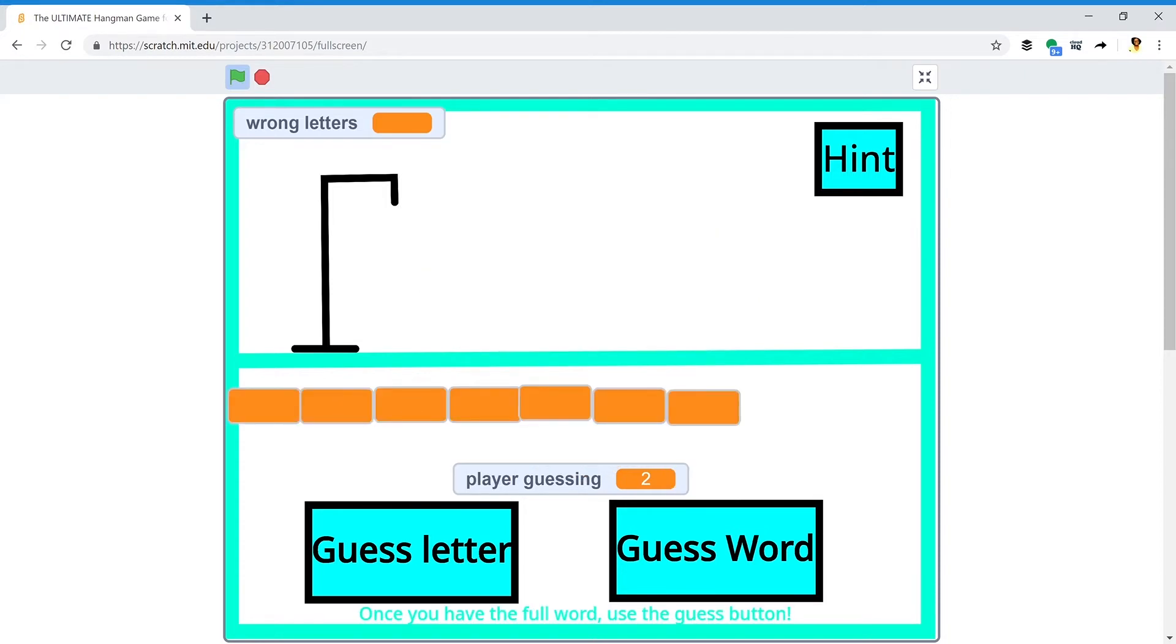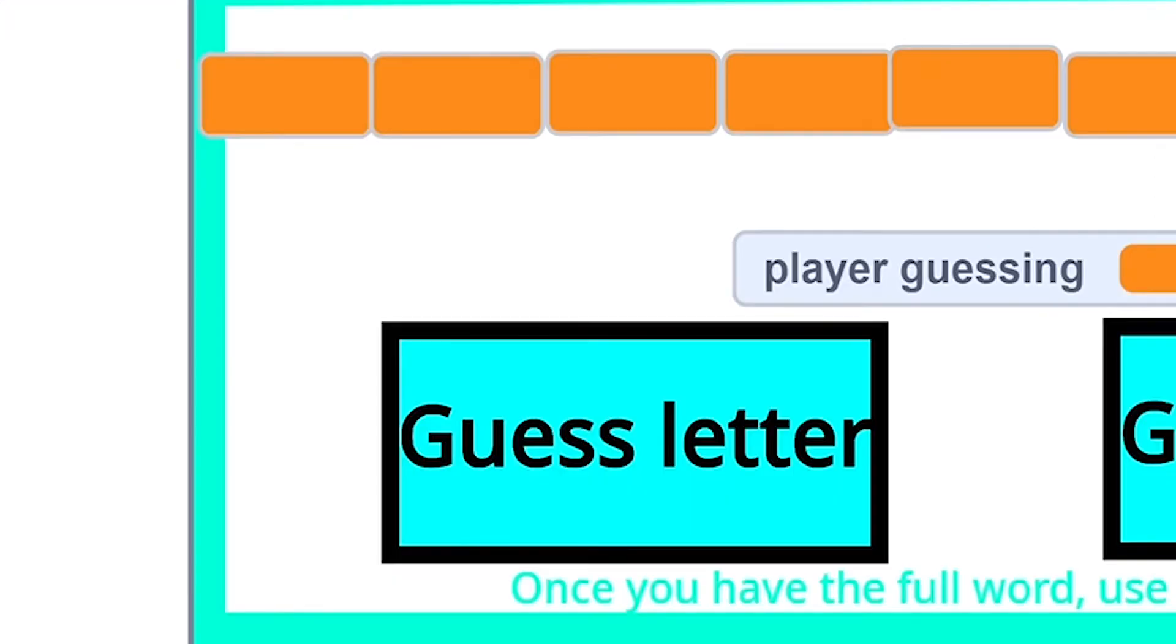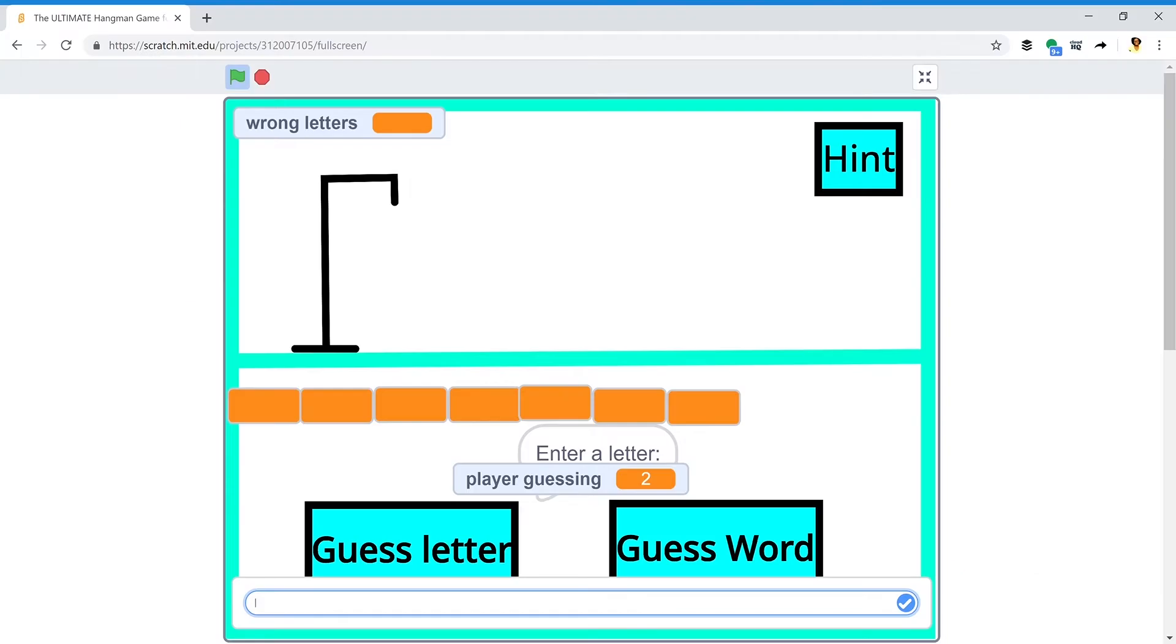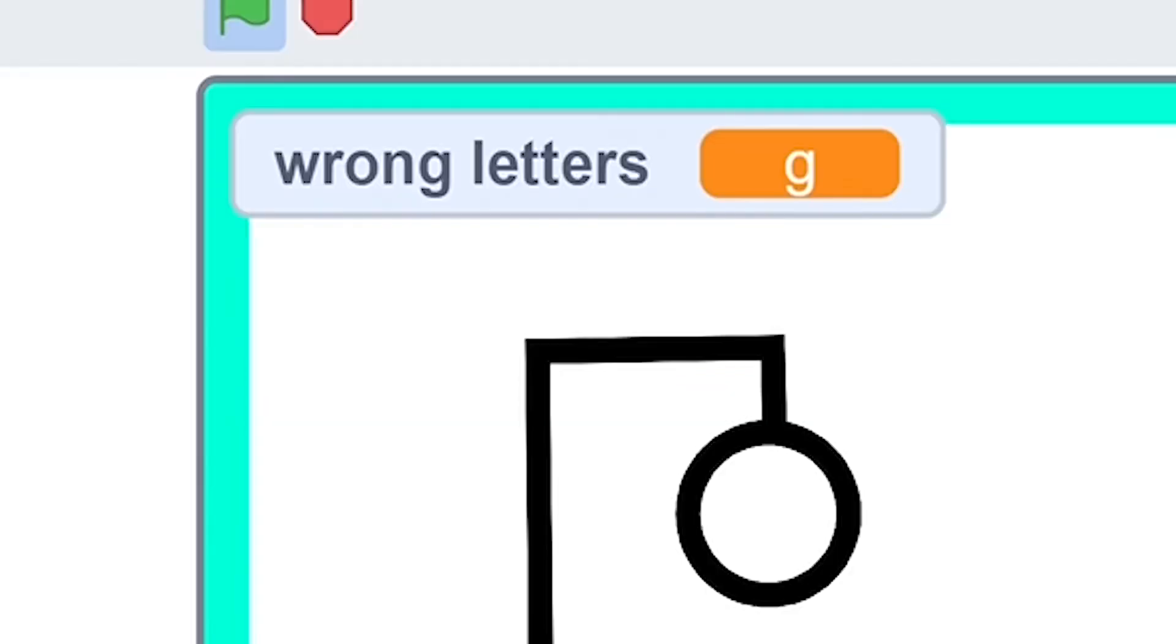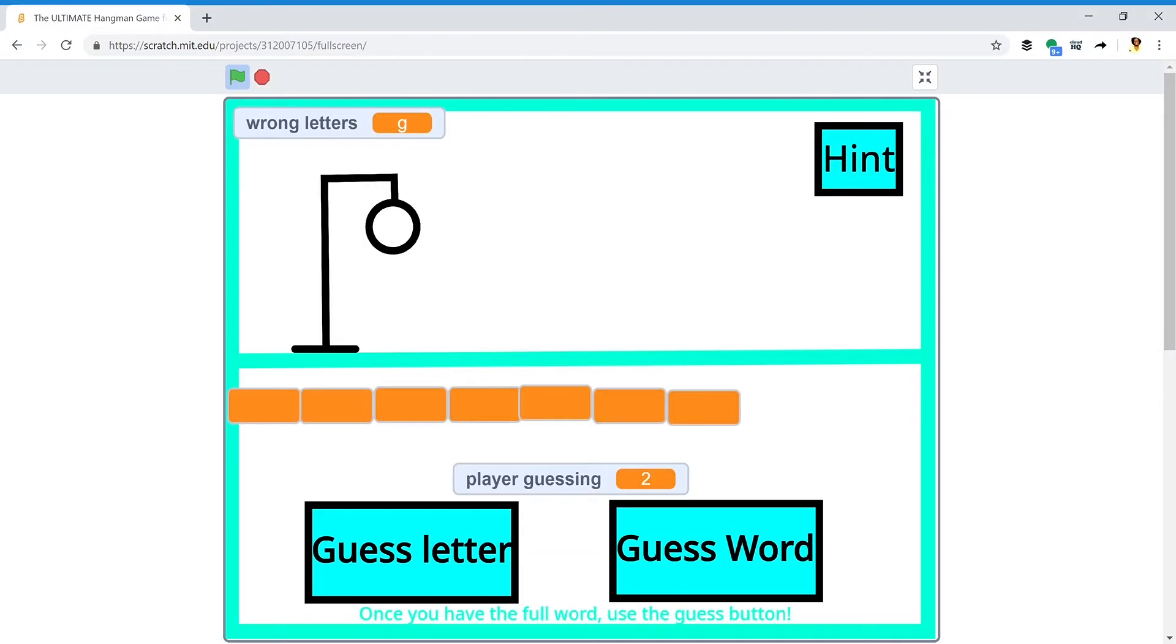So each box is a letter in the word. Now you have to guess, so you have to press guess letter and then you can guess the letter. Okay, let's see, I'll guess G. No, that wasn't it. So up here in wrong letters it says G, so you can't put that again. Yeah, because it was wrong. Now their head is there.